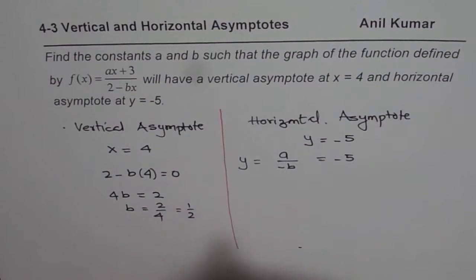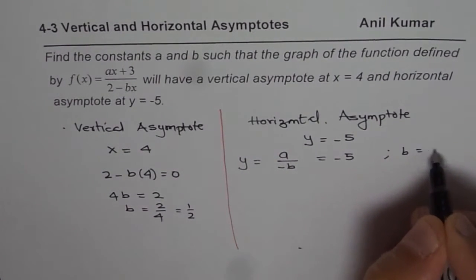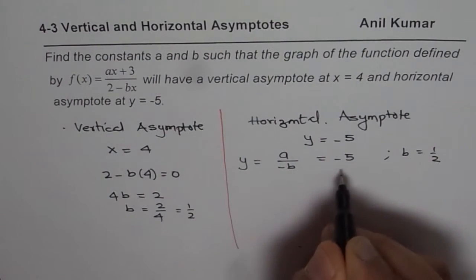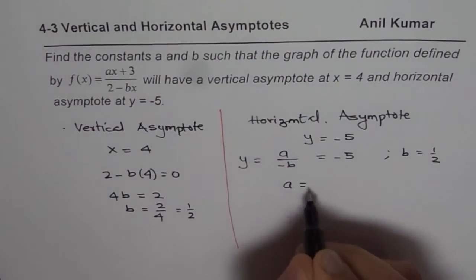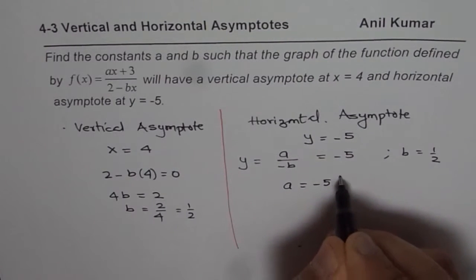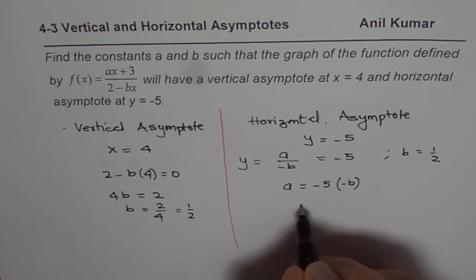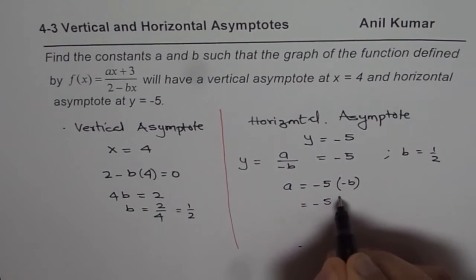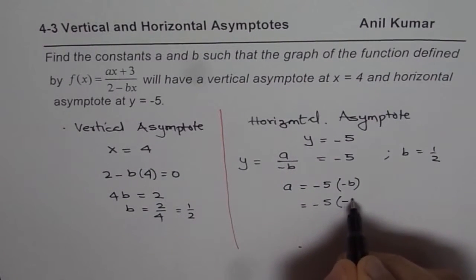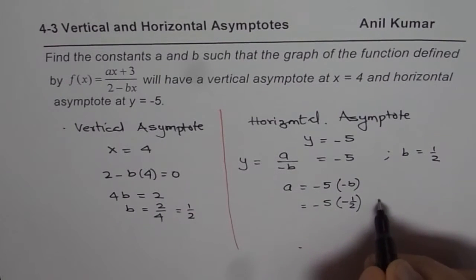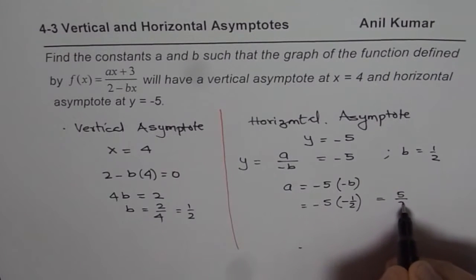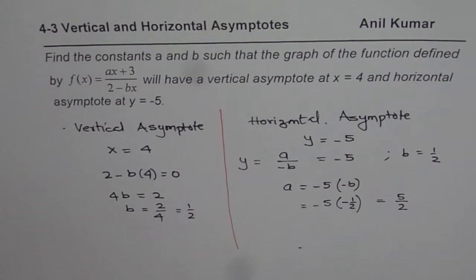We have just found that b equals one half. Substituting into a over minus b equals minus 5, we get a equals minus 5 times minus one half, which gives us plus 5 over 2. So the value of a is 5 over 2.